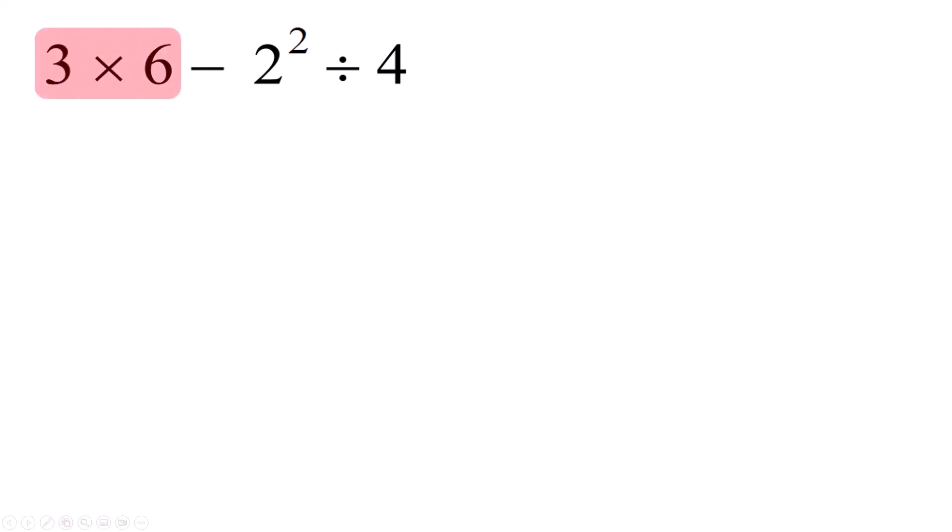If I start with 3 times 6, I'm going to get 18 minus 2 squared divided by 2. I'm going to need to do this exponent next, so that's 4. So I have 18 minus 4 divided by 2. If I do the 18 minus 4, that would give me 14.